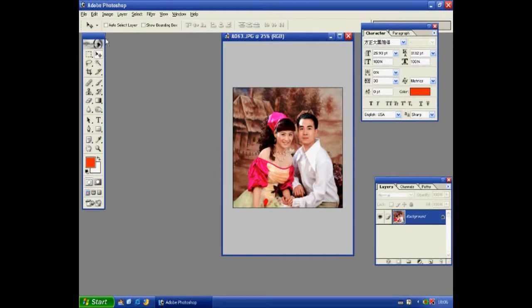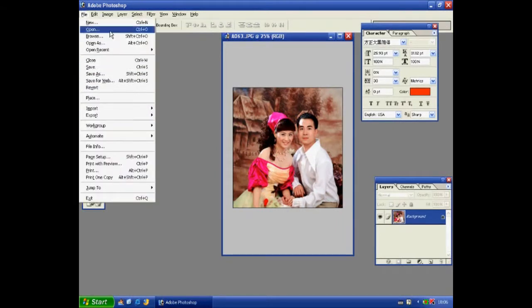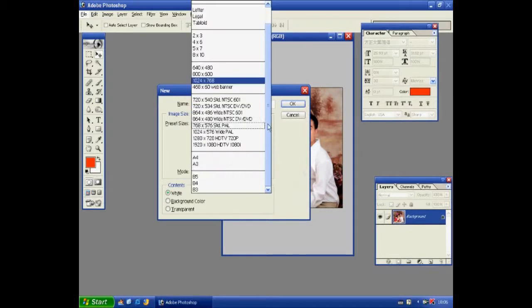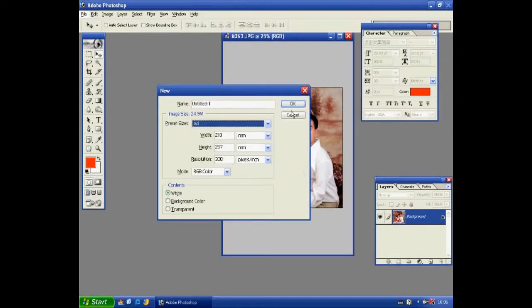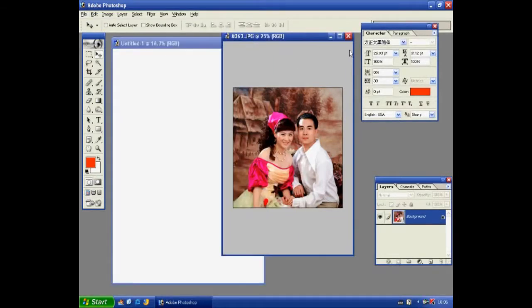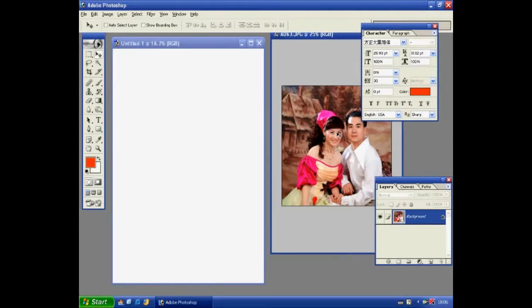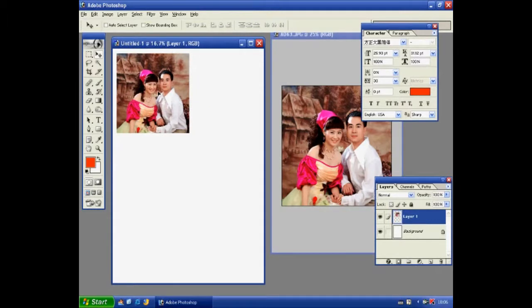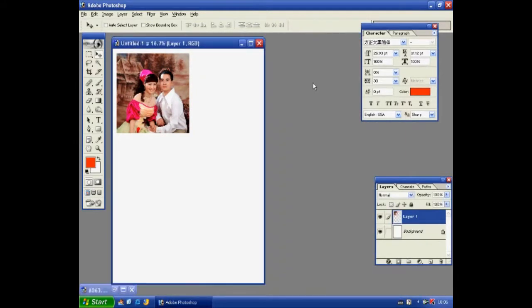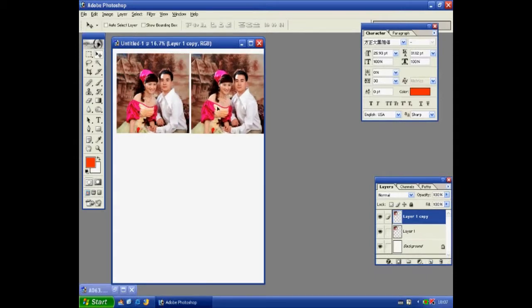Then, we open a file and create a new file, A4 size. We put the picture designed into the A4 size file. We can copy the picture. Adjust the position of the picture to save film.